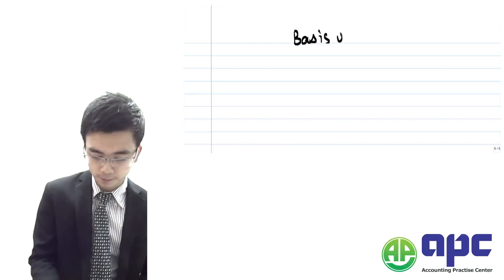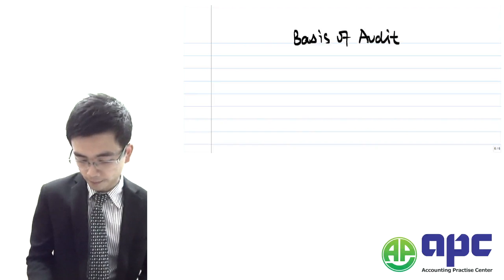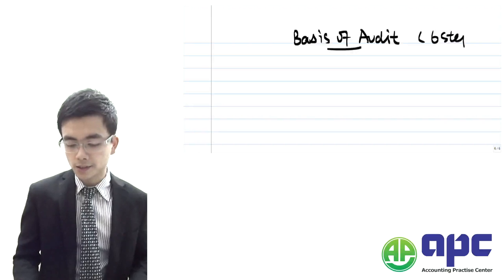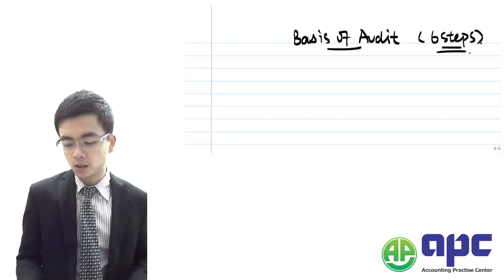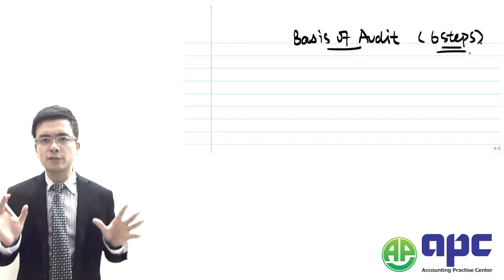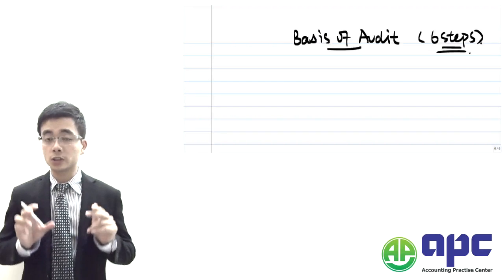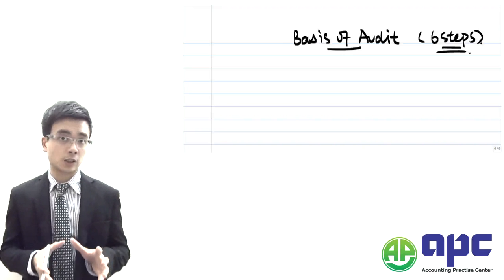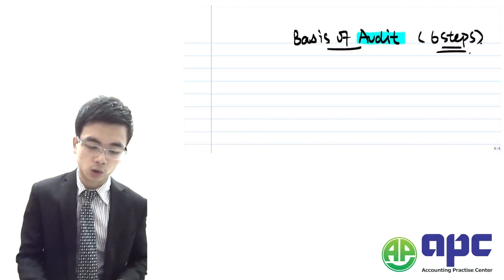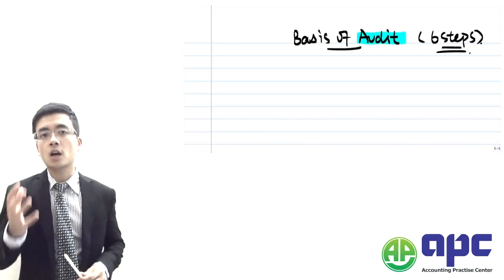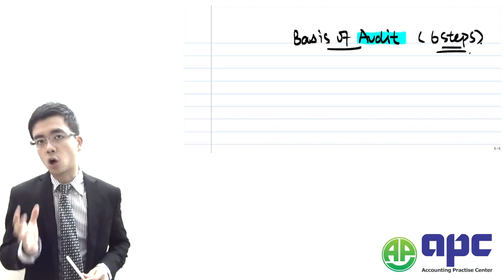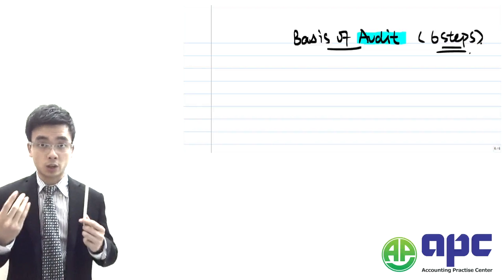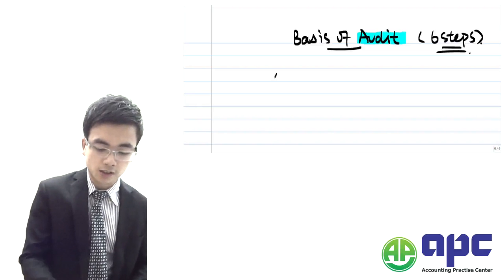Basis of audit. All we need to do is follow the six steps when doing the audit. Every audit firm across the globe will focus upon these six steps. What do I mean by audit? It's what I mean by 'check' — we're going to check whether or not the financial statements of the company are actually correct. So we're going to follow the six steps, with step number one being the acceptance stage.